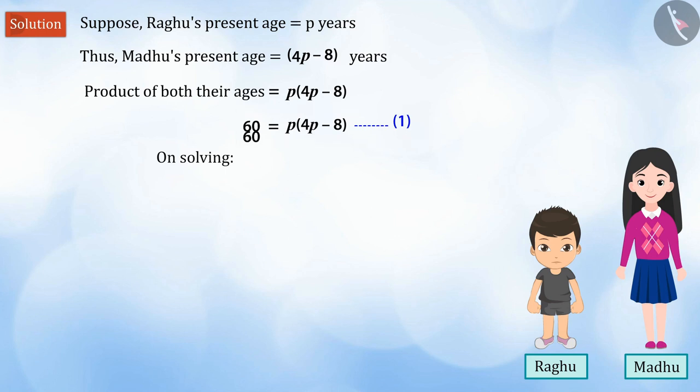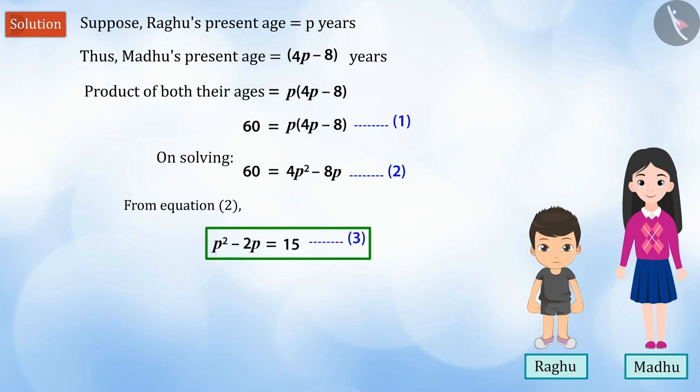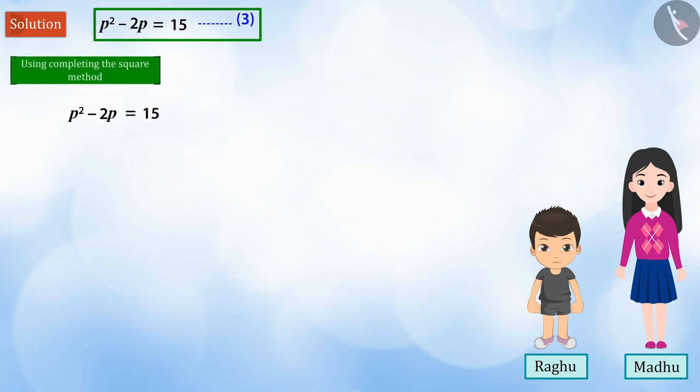Solving equation 1, we get equation 2, which is 60 equal to 4p squared minus 8p. Simplifying equation 2, we get equation 3. If we divide the coefficient of p in equation 3 by 2, we will get 1. Adding and subtracting the square of 1 on the left side, we can balance the equation.